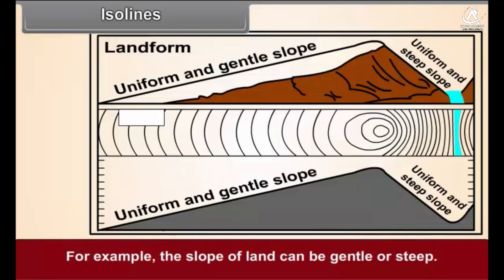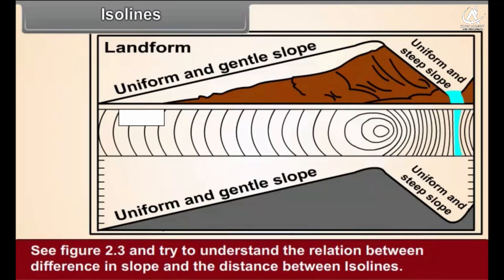For example, the slope of land can be gentle or steep. See figure 2.3 and try to understand the relation between difference in slope and the distances between isolines.